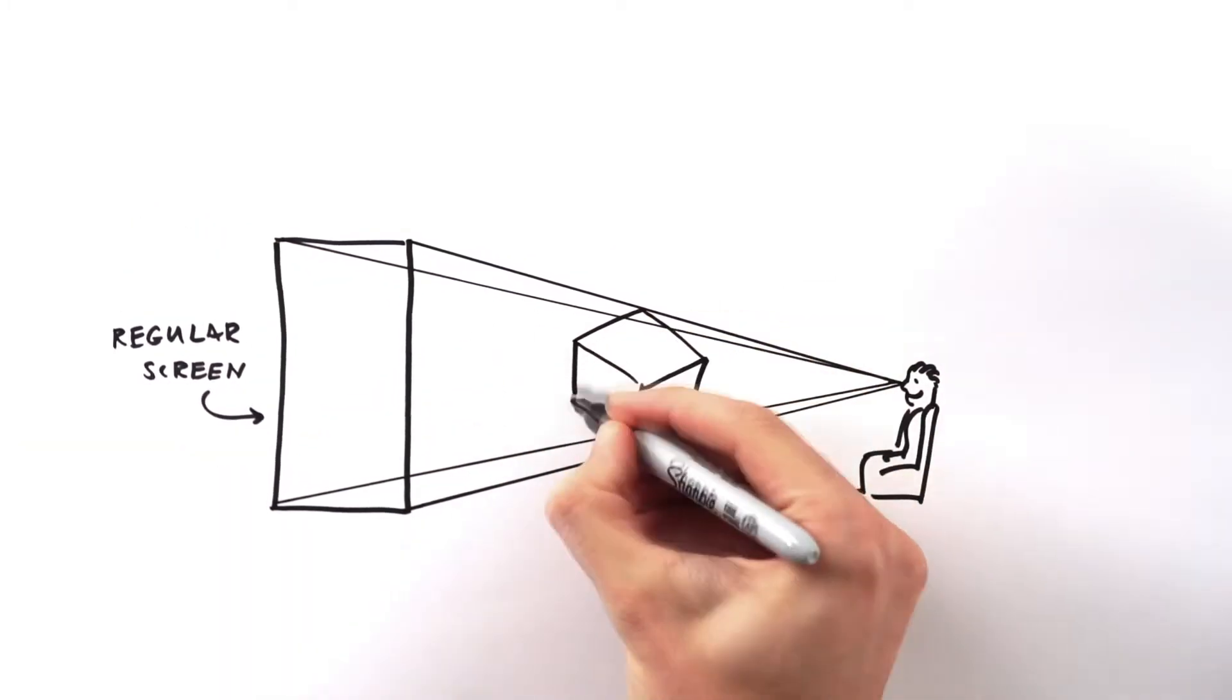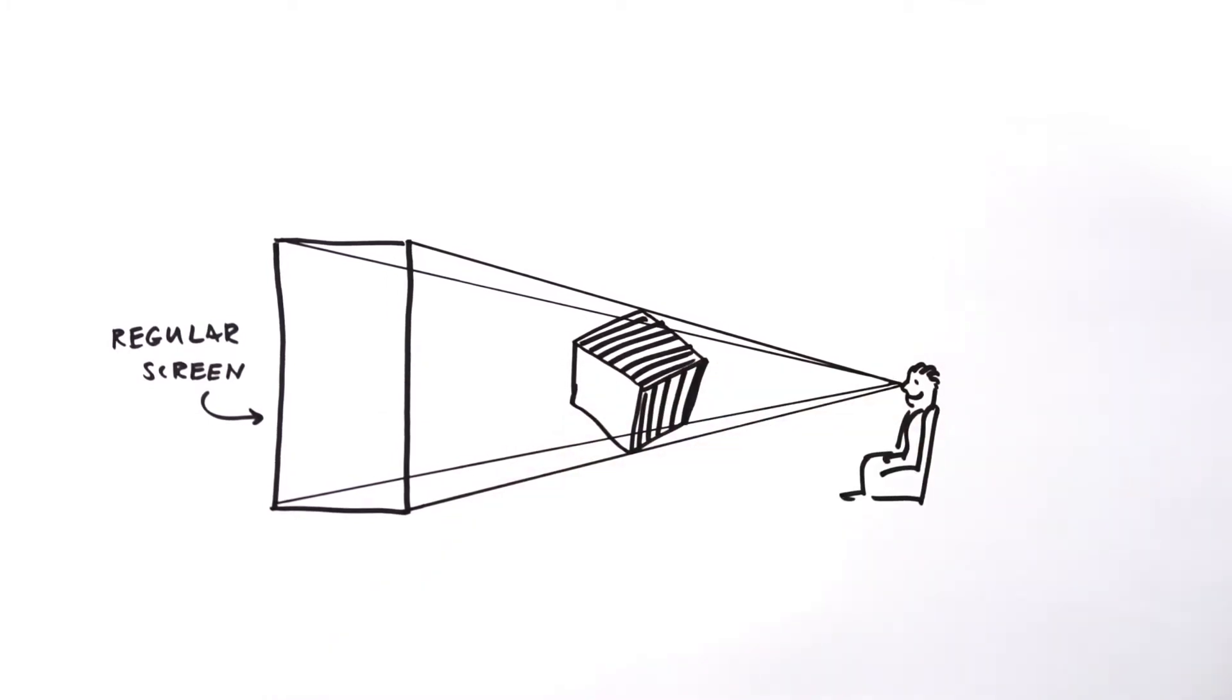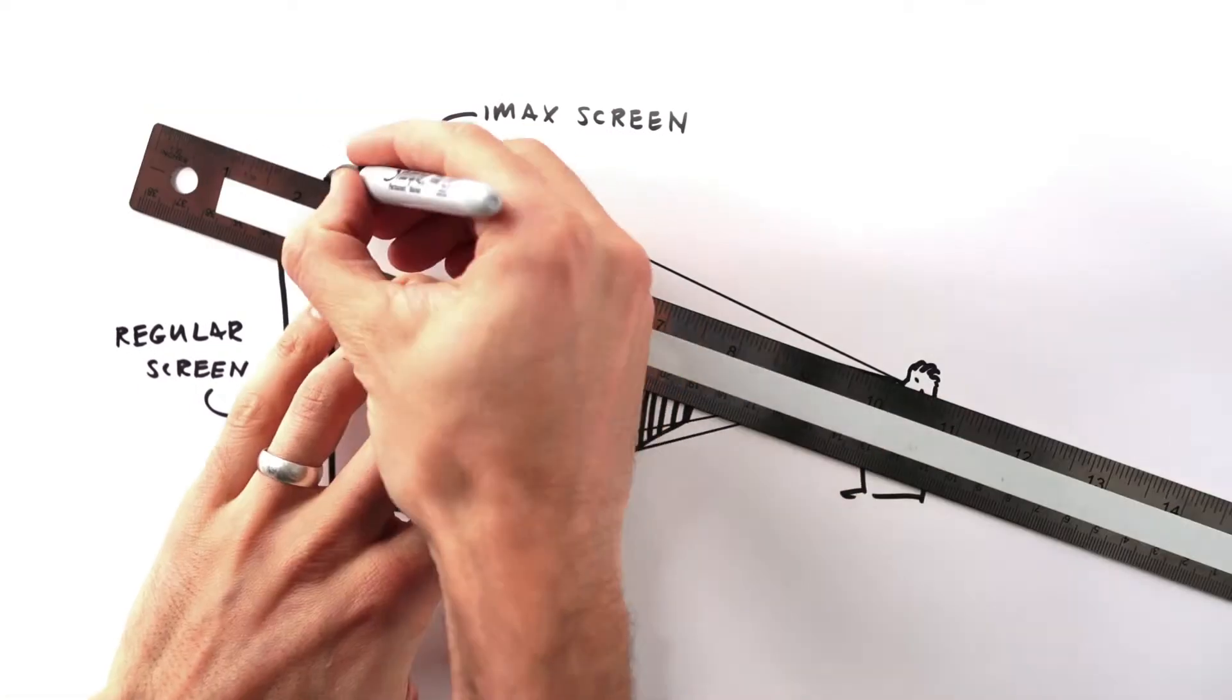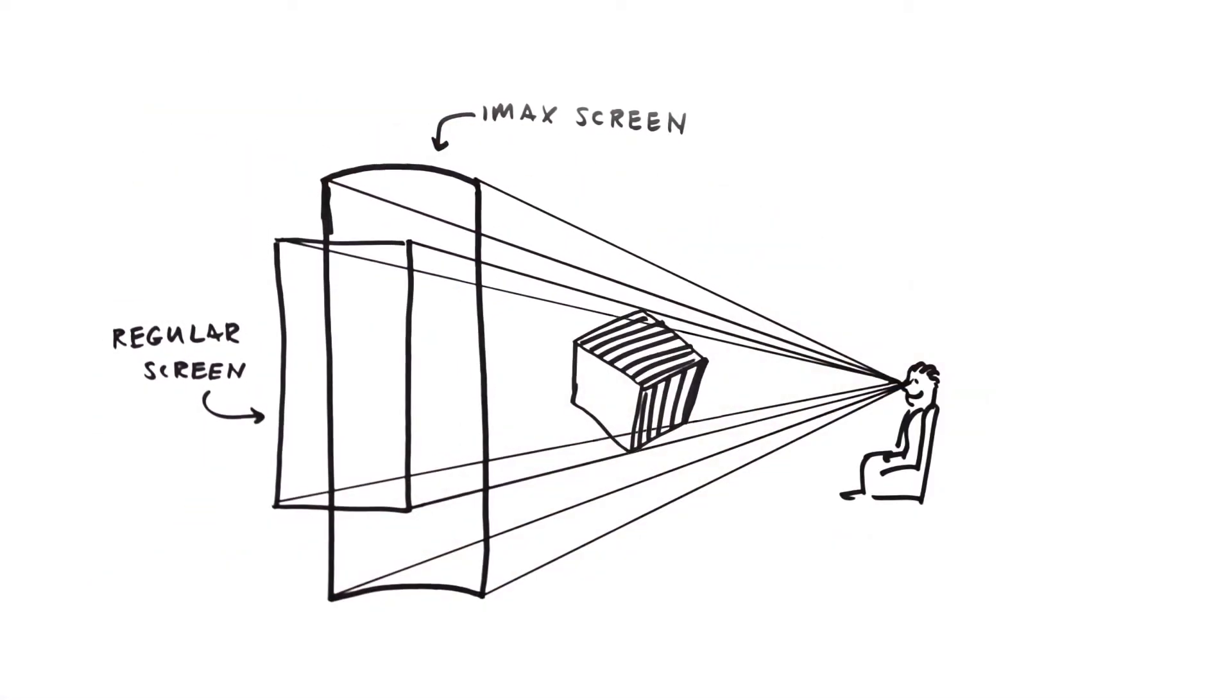3D images that come off the screen and into the theater can only appear within the boundaries of this pyramid, and IMAX's steeper viewing angles make a larger pyramid, which means images can come further out into the audience without distortion.